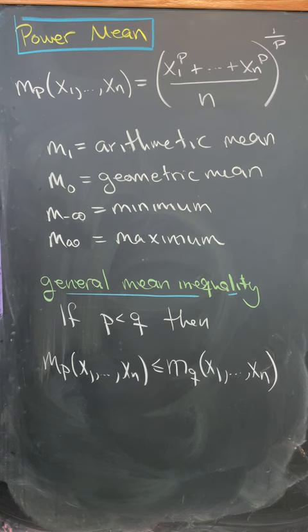What's nice about this is you get a generalization of the mean inequalities that you might be familiar with. That is, if p is less than q, then mp of some numbers is less than or equal to mq of some numbers.